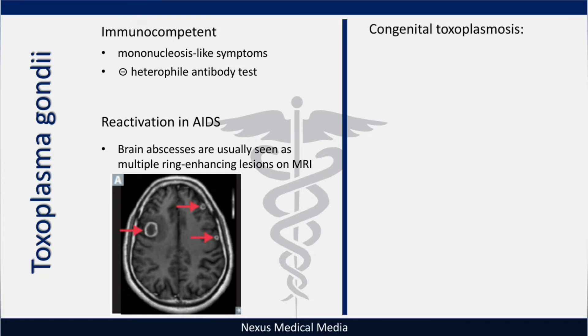Another deadly condition is congenital toxoplasmosis. This occurs when a pregnant woman gets toxoplasma and passes it to the child — a vertical transmission. Remember, toxoplasma is the first infection on the TORCH pneumonic. The child presents with a classic triad: chorioretinitis, hydrocephalus, and intracranial calcifications.